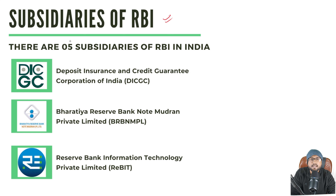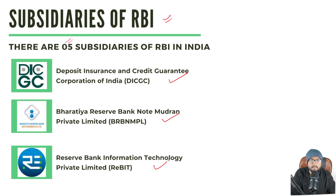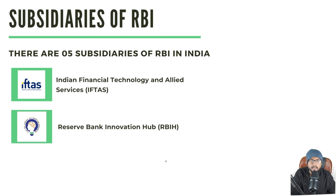In this video, we will discuss the subsidiaries of RBI. There are five subsidiaries: Number one is Deposit Insurance and Credit Guarantee Corporation of India; number two is Bharatiya Reserve Bank Note Mudran Private Limited; number three is Reserve Bank Information Technology Private Limited; number four is Indian Financial Technology and Allied Services; and number five is Reserve Bank Innovation Hub.